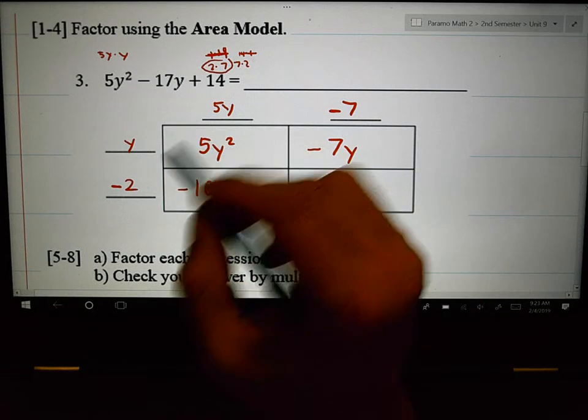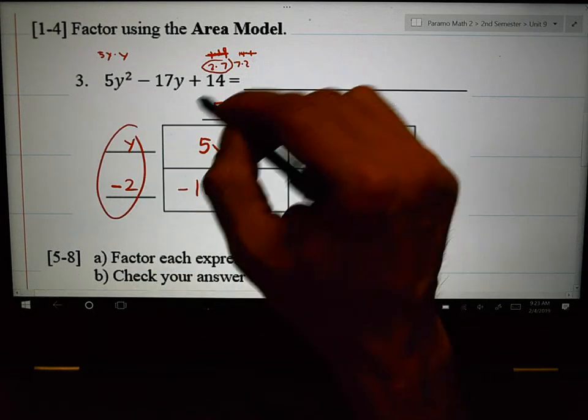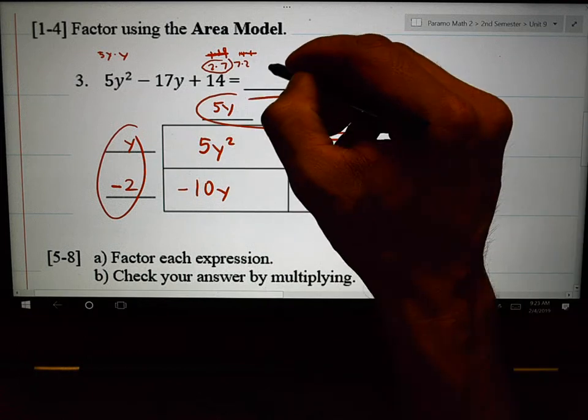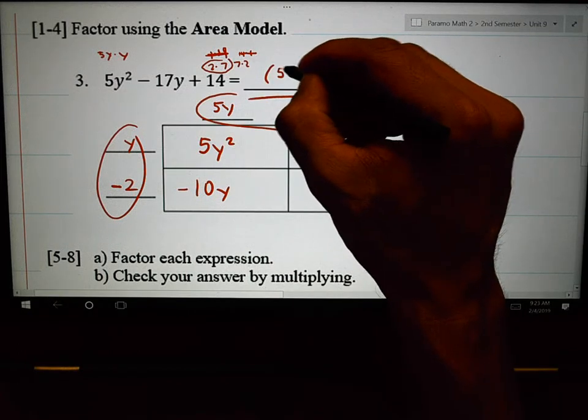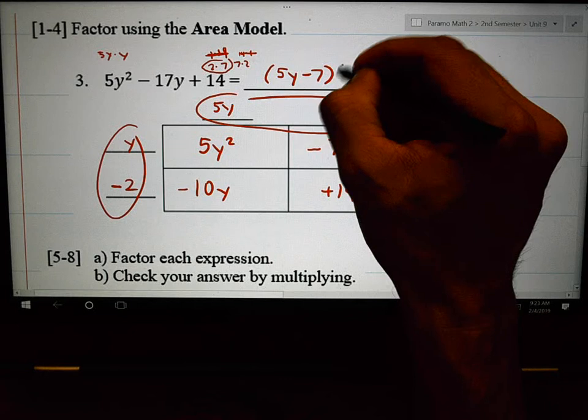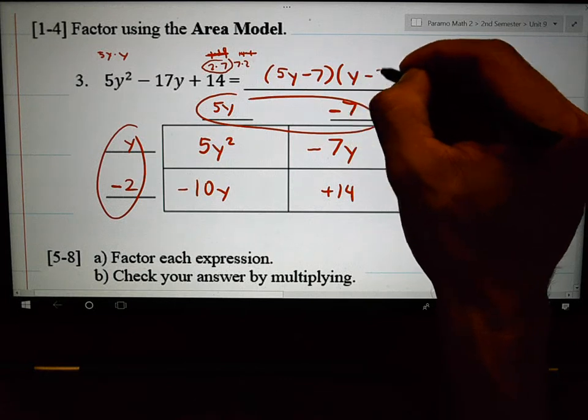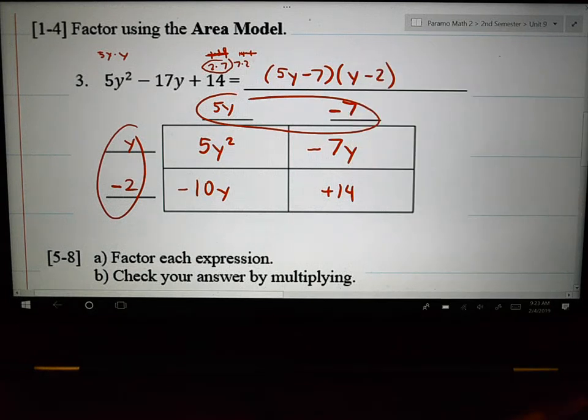So, what this basically shows you is with the area model, I can break things apart. 5y minus 7, parenthesis, y minus 2. The numbers got bigger. A whole lot bigger. The good thing is there was only four possibilities there.